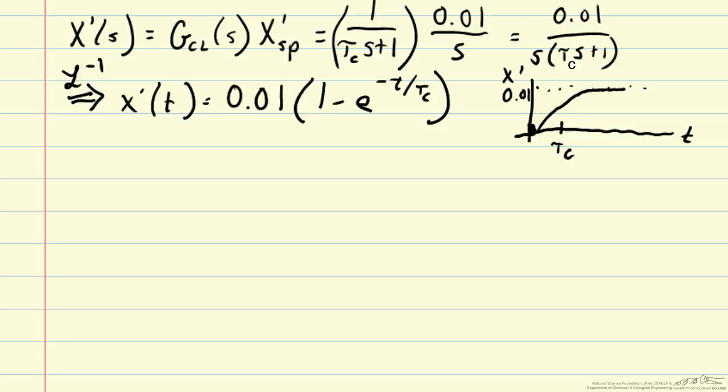What control law are we going to use in order to get that closed-loop behavior? So we can take the transfer function for the closed-loop system that we had previously derived as gp gc over 1 plus gp gc.